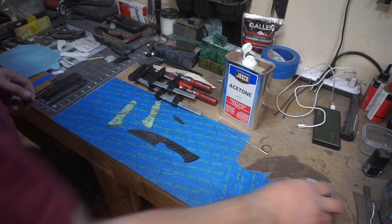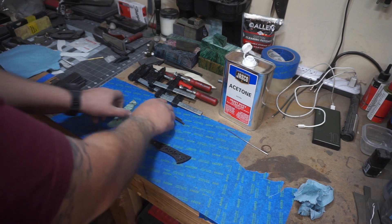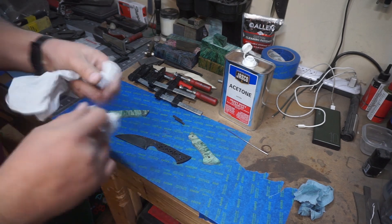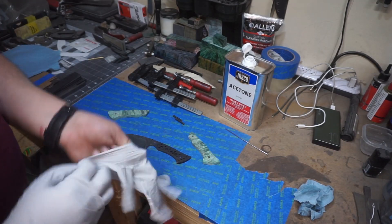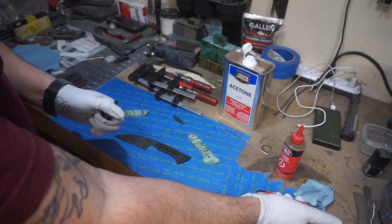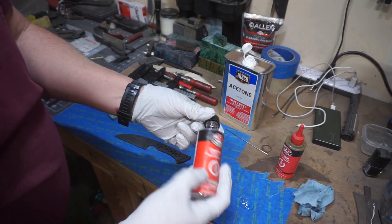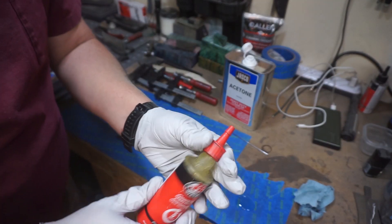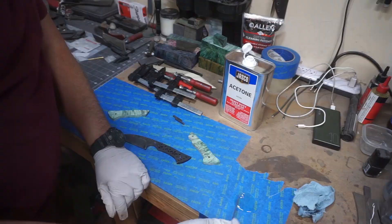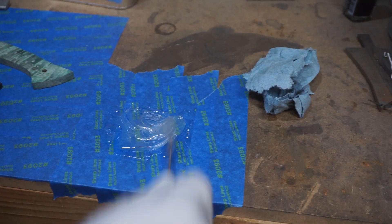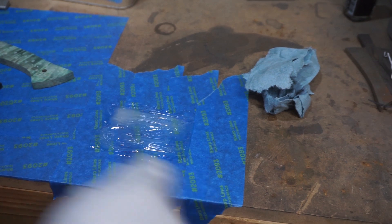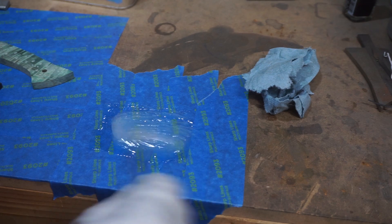Once we got that all cleaned up, it's time to put on some gloves and get to mixing some epoxy and glue this bad boy up. I'm just using JB Weld two-part epoxy, this is a five minute epoxy. We want to make sure that we mix this up really well. The last thing we want is a bad bond because we didn't mix epoxy properly.